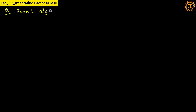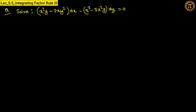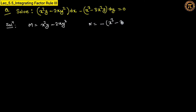Let's understand with an example. Solve: (x²y − 2xy²) dx minus (x³ − 3x²y) dy equals 0. Here M equals x²y minus 2xy² and N equals minus x³ minus 3x²y. First check whether these are homogeneous functions.